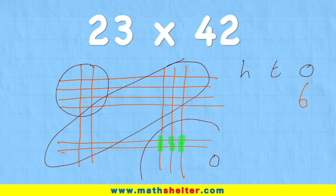Now I'm looking at the 10s column, and I have lots of crossovers here. I have 1, 2, 3, 4, 5, 6, 7, 8, 9, 10, 11, 12. But then there's some over here as well: 13, 14, 15, 16. So I have 16 tens.